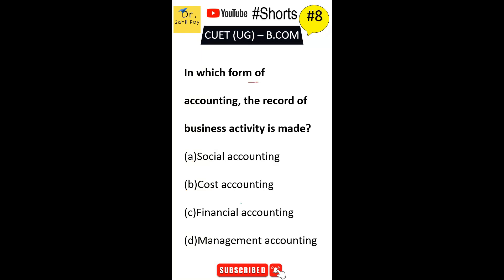In which form of accounting is the record of business activity made? First option is social accounting. Second option is cost accounting. Third option is financial accounting. Fourth option is management accounting. The correct answer is Option A, social accounting.